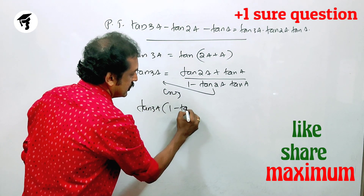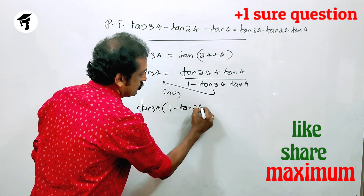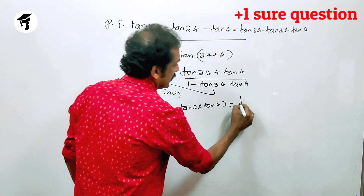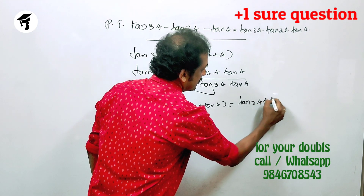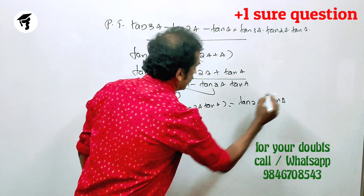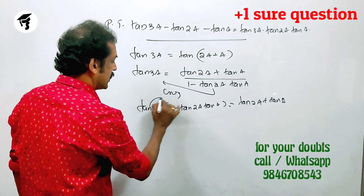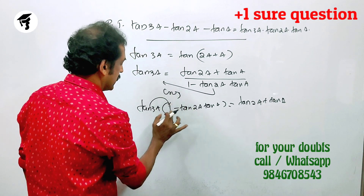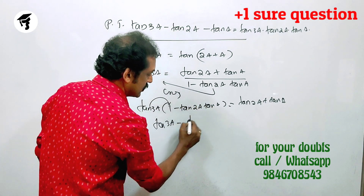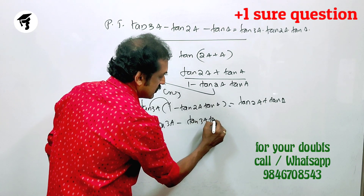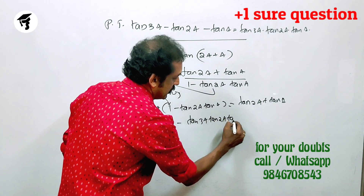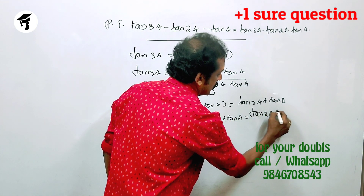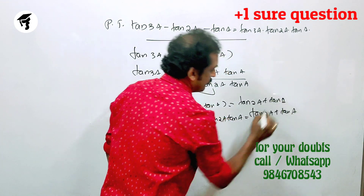tan(3a) into 1 minus tan(2a) into tan(a) is equal to tan(3a) plus tan(a), tan(2a) plus tan(a). tan(a) plus tan(a). tan(3a) minus tan(3a) into tan(2a) into tan(a) is equal to tan(2a) plus tan(a).